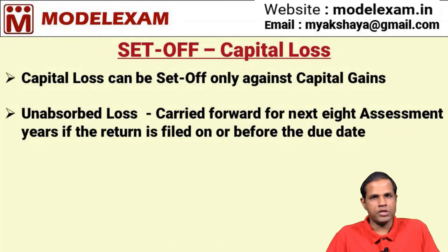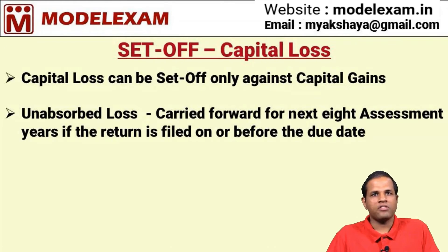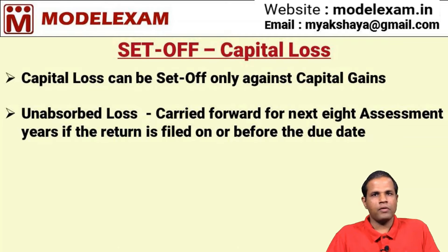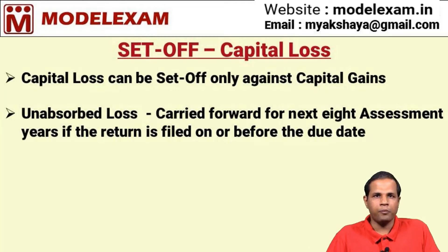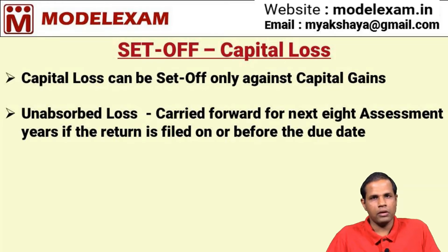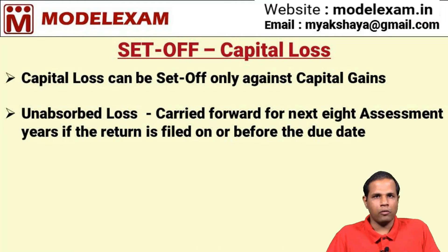The first provision: capital loss can be set off only against capital gains. It means that capital loss cannot be set off against other sources of income like business income or salary income, etc. So we have to set off capital loss only against capital gains. And any unabsorbed loss — for example, if there is a capital loss of 1 lakh and a capital gain of only 75,000, there is still a loss of 25,000 which remains not set off. This loss is known as unabsorbed loss.